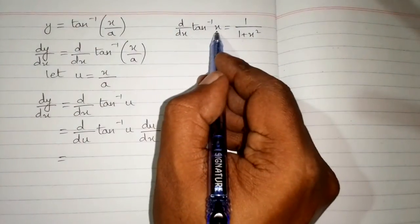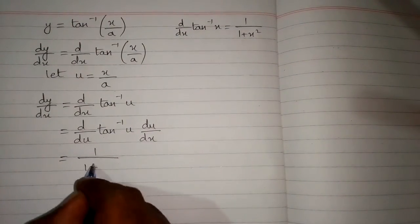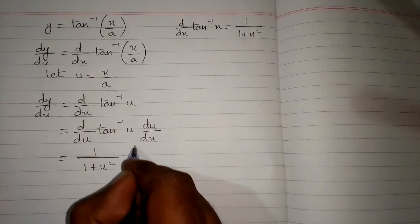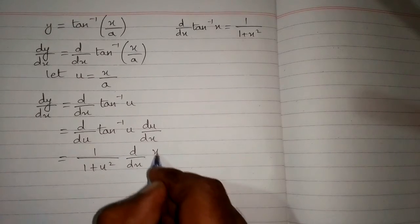Now we can apply this formula. So we have 1 upon 1 plus u square, multiplied by the derivative of x upon a.